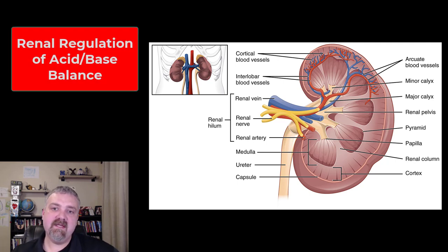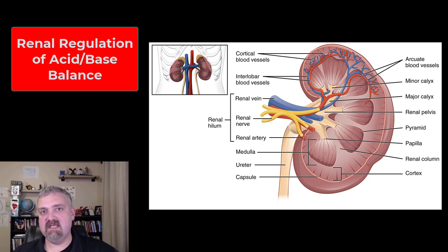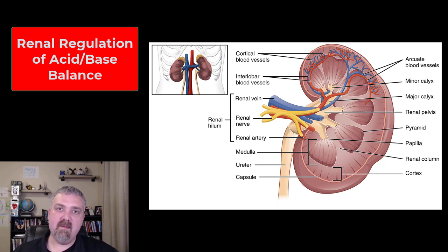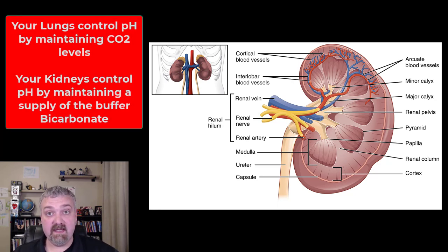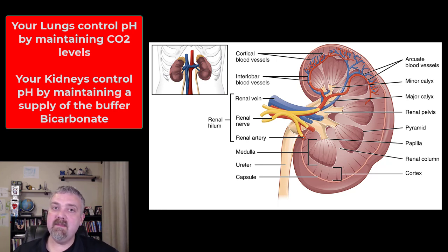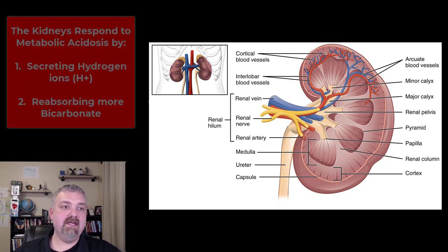Hey everybody, Dr. O. We just got done talking about how the respiratory system plays a big role in maintaining acid-base balance, primarily by determining how much carbon dioxide and hence how much carbonic acid is in your body. Now we're going to look at the renal mechanisms, and this primarily has to do with the buffers, primarily bicarbonate. So think about CO2 and carbonic acid with the lungs; with the kidneys, we primarily think about the buffer bicarbonate. Let's go ahead and take a look here.